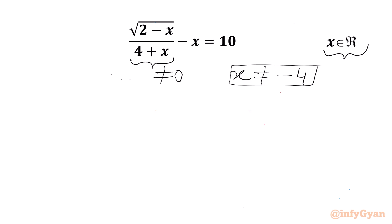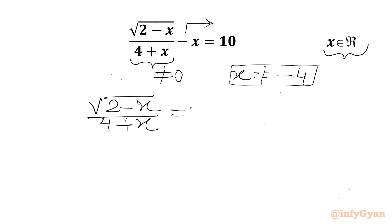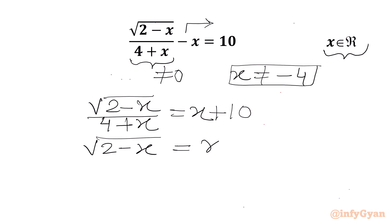Now I will add x to both sides, or we can take minus x to the RHS. We will write the equation: square root of (2 minus x) over (4 plus x) equals x plus 10. Now we can cross multiply, so square root of (2 minus x) will be equal to (x plus 4) times (x plus 10).